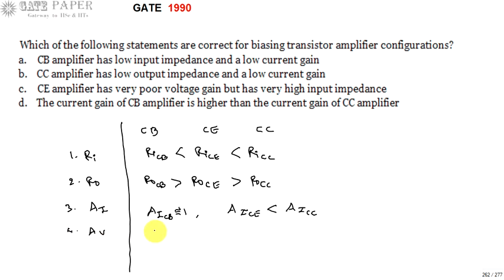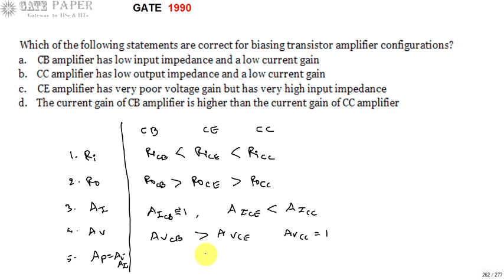Voltage gain AV: voltage gain is very high in the case of common base compared to common emitter, and the voltage gain of common collector is 1, that is unity voltage gain. Common collector has unity voltage gain whereas common base has unity current gain. For power gain AP, which is the product of AV and AI, common emitter has the highest power gain compared to common base and common collector.